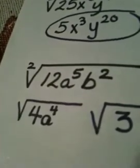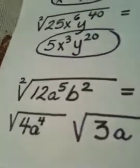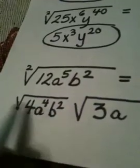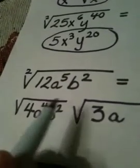a to the 4th goes in the good house. a goes in the junk house. Is 2 divisible by 2? Yes. So that means b squared goes in the good house. So what I've done is I've broken this into the good house and the junk house. The junk house is junk because it stays under the radical.